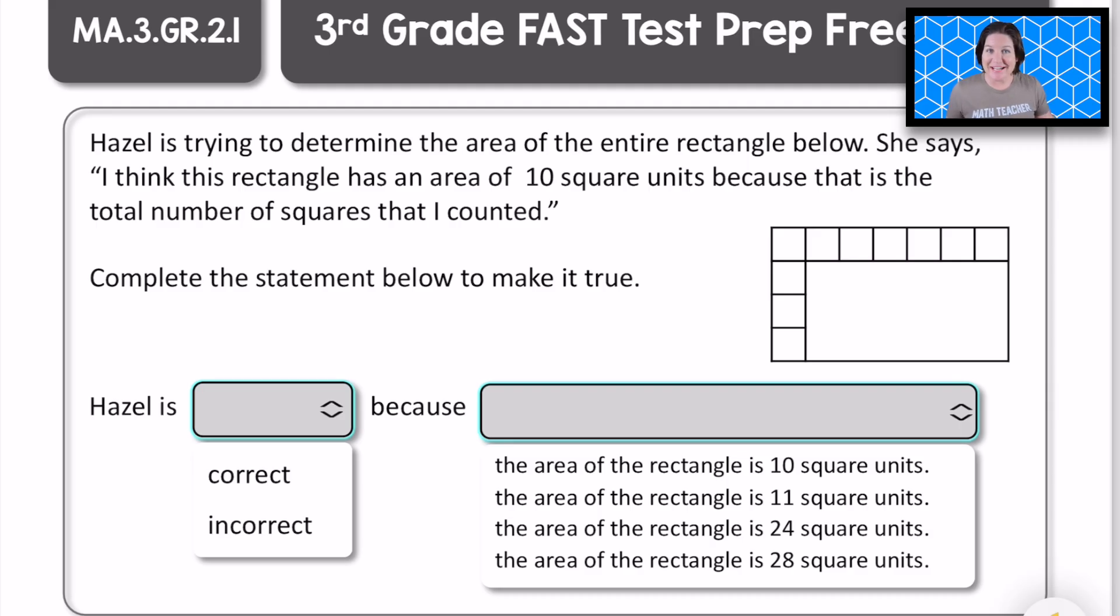Welcome back third grade. Let's go over this one. This one says, Hazel is trying to determine the area of the entire rectangle below. She says, I think this rectangle has an area of 10 square units because that is the total number of squares that I counted. Complete the statement below to make it true.